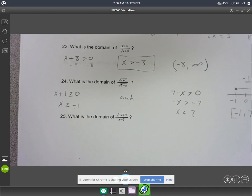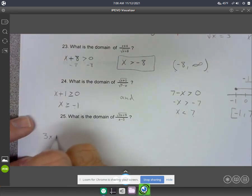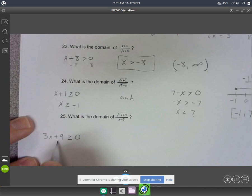Moving on. Number 25. What is the domain of this? You'll take that 3x plus 9. And you're going to say that has to be positive. It's got to be greater than or equal to 0. Move the 9 over. Divide by 3. And you're going to get x is greater than or equal to negative 3.